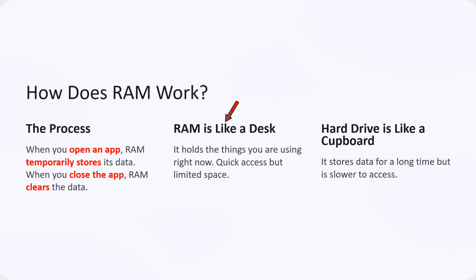RAM is like a desk — it holds the things you are using right now. It gives quick access but has limited space. A hard drive is like a cupboard: it stores data for a long time, but is slower to access.